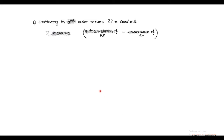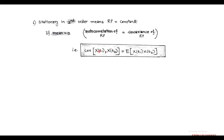There is an important point regarding a stationary random process of second order. The second-order stationary random process has constant covariance if the mean value equals zero, which means covariance and autocorrelation are identical. That is, the autocorrelation of the random process equals the covariance, i.e., covariance of X(t1), X(t2) equals expectation of the product of X(t1) into X(t2).